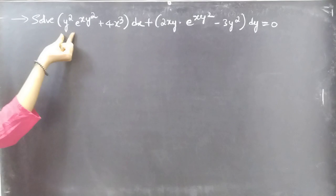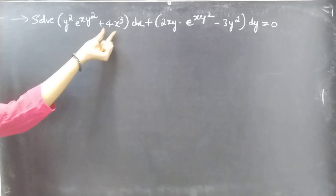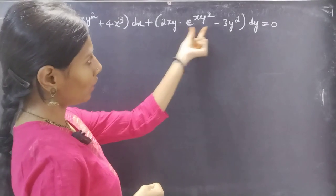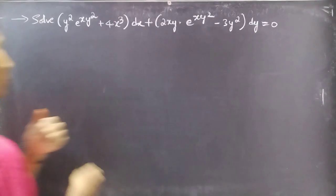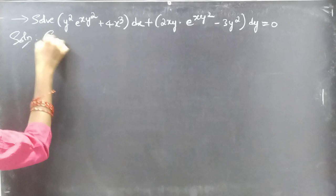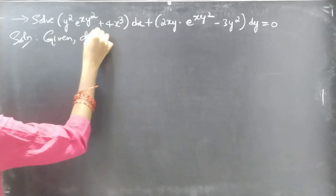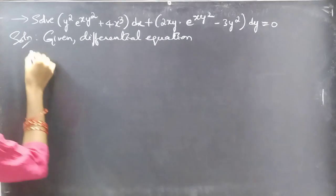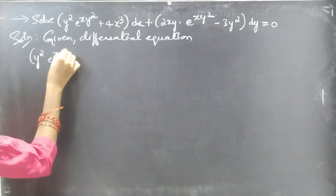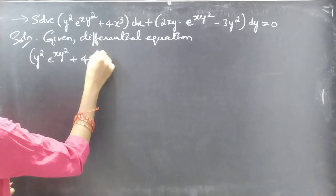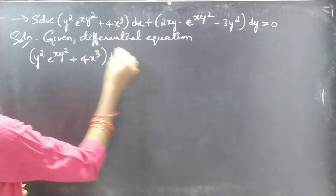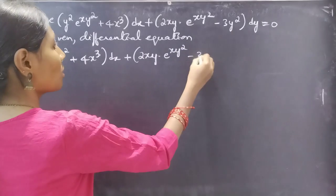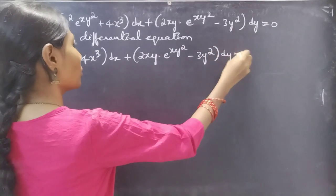Problem: Solve y² e^(xy²) + 4x³ dx + 2xy · e^(xy²) − 3y² dy = 0.